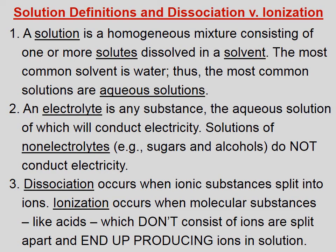When molecular compounds do form ions, like acids and ammonia, it's called ionization, not dissociation. Let's review: one, a solution is a homogeneous mixture consisting of one or more solutes dissolved in a solvent — the most common solvent is water, so the most common solutions are aqueous solutions. Two, an electrolyte is any substance whose aqueous solution will conduct electricity; solutions of non-electrolytes like sugars and alcohols do not conduct electricity. Three, dissociation occurs when ionic substances split into ions, while ionization occurs when molecular substances like acids — which don't consist of ions — are split apart and produce ions in solution.